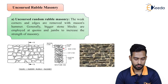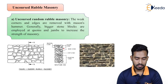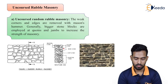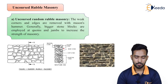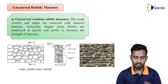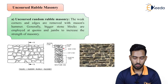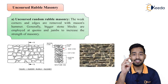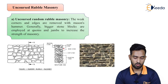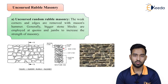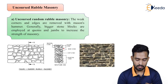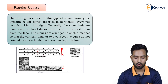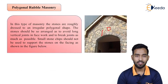Next comes regular coursed rubble. In this type of stone machinery, uniform height stones are used in horizontal layers not less than 13 centimeters in height, as you can see. The stone bed joints are hammer or chisel dressed to a depth of at least 10 centimeters from the face of the wall. The stones are arranged in such a manner so that the vertical joints of two consecutive courses do not coincide with each other. The alternate joints come above each other but there is no direct contact between each layer, avoiding any cracking.